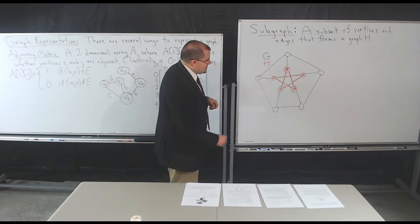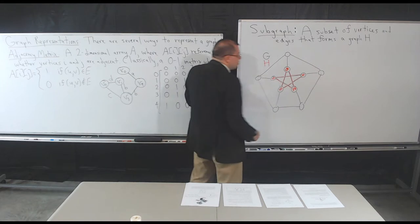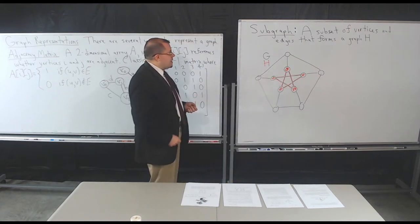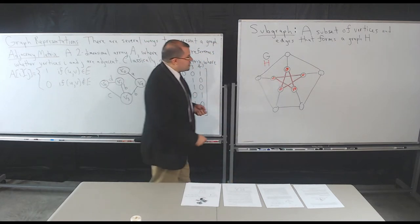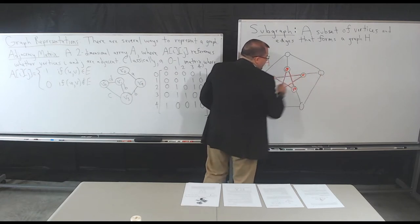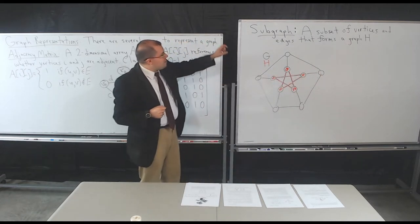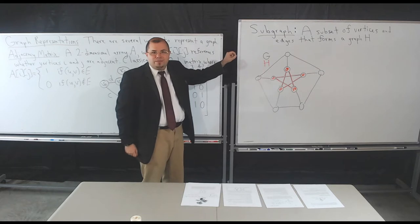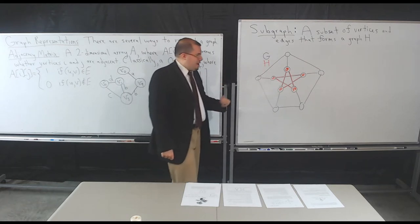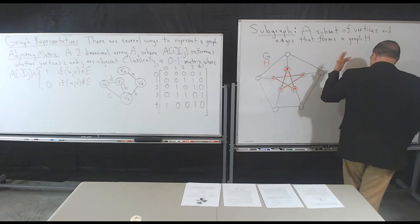Note that technically the subgraph could be without this edge here in red — that is perfectly valid. However, I cannot just have an edge sitting out here without that vertex. It's very important that it forms another graph. We clearly cannot have a graph where there's just an edge sitting out here because there's no vertex.